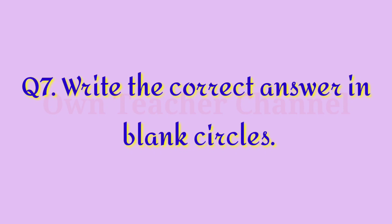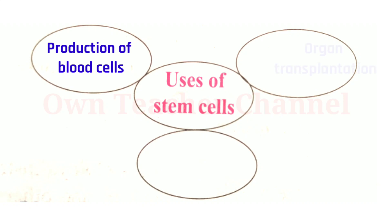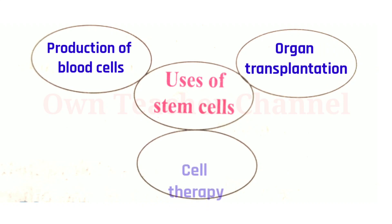Question 7: Write the correct answer in blank circles for uses of stem cells. Uses of stem cells include: Production of blood cells, Organ transplantation, and Cell therapy.